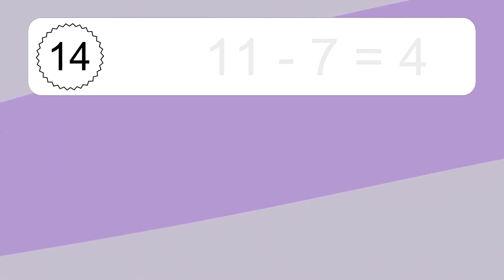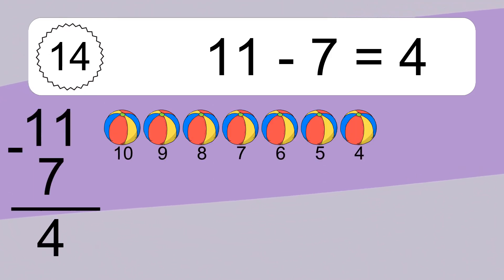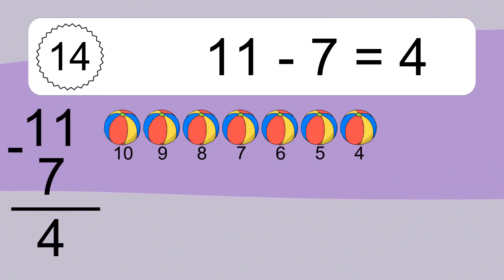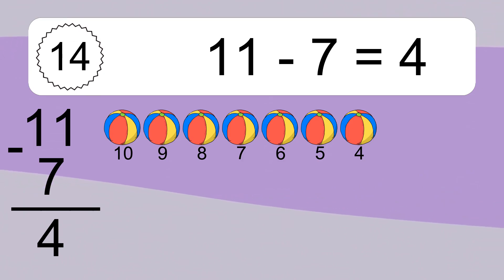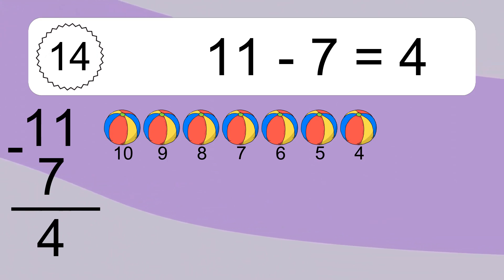11 minus 7 equals 4. Let's count it. 10, 9, 8, 7, 6, 5, 4.